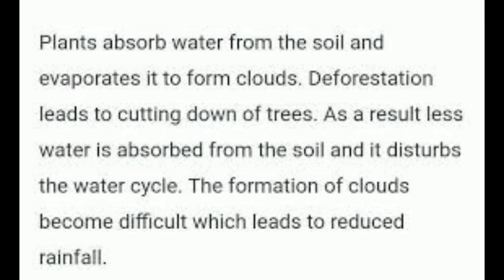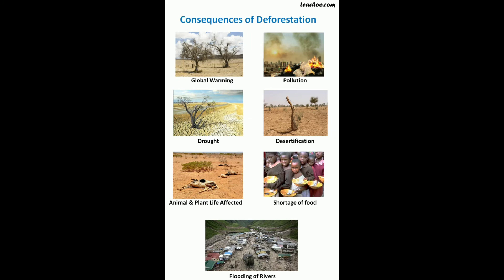Deforestation is a major cause which leads to change in soil properties. Physical properties of the earth get affected by plantation and vegetation. Trees prevent soil erosion — the washing away of soil by the flow of water. Fewer trees result in more soil erosion. Removal of the top layer of soil exposes the lower hard and rocky layers, and gradually the fertile land gets converted into desert — that is known as desertification.